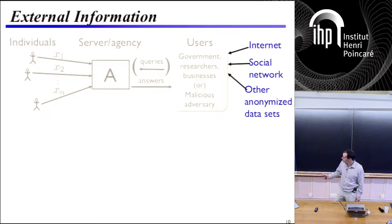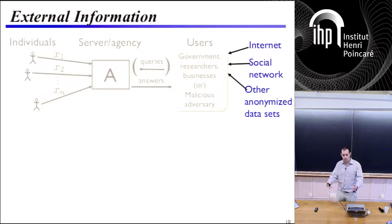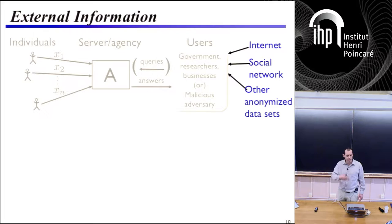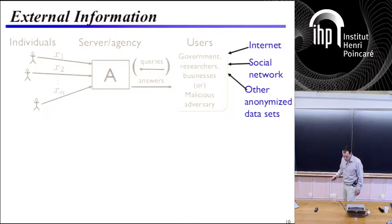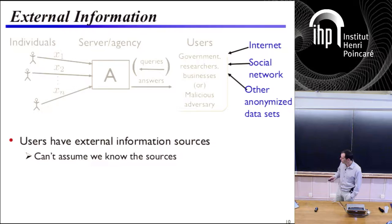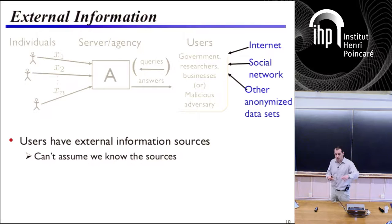One of the things that makes it very hard to understand exactly what we're after is the availability of external information, other than what you are publishing directly as part of the outputs of the algorithm. In most of cryptography and information theory, when something is secret, it doesn't matter what else is available — definitions like semantic security take care of that. But in our case, it does play a role. Users have external information sources: the internet, their own social networks, perhaps other anonymized data sets. We can't assume that we, as the designer of this algorithm, know what is known to the users, never mind what they might know in the future.